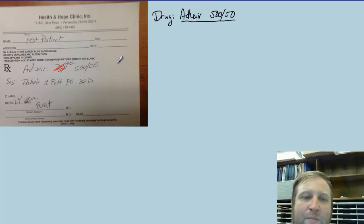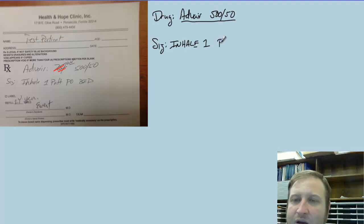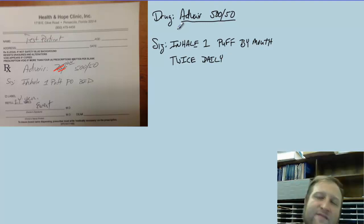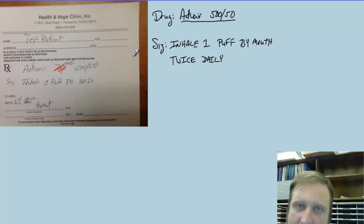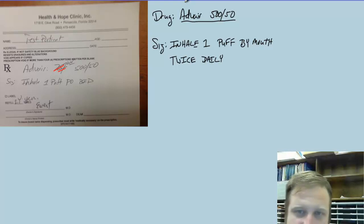The SIG here would be: inhale 1 puff PO BID — PO means by mouth, BID means twice daily. Advair is actually very liberal — they will send us three inhalers no matter what, so hopefully that philosophy doesn't change.